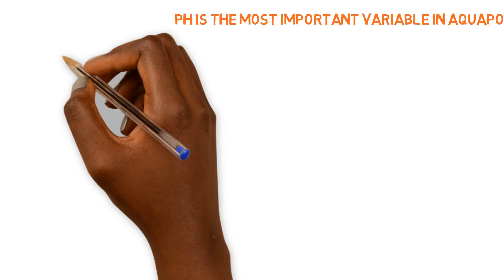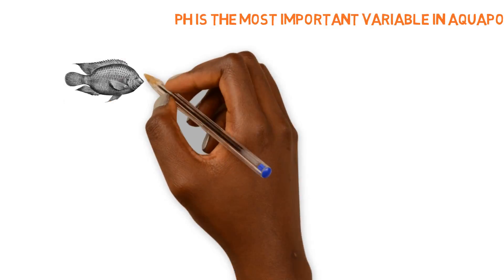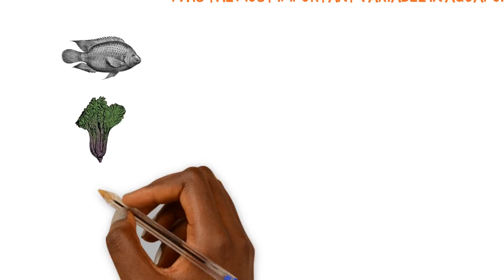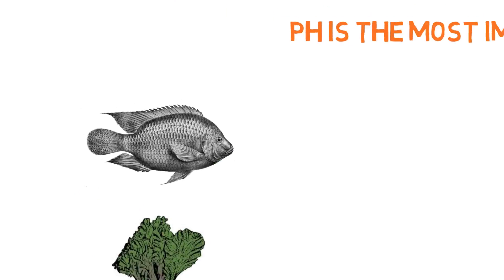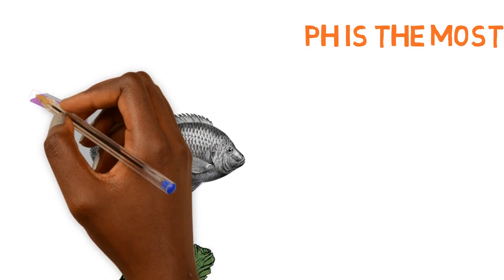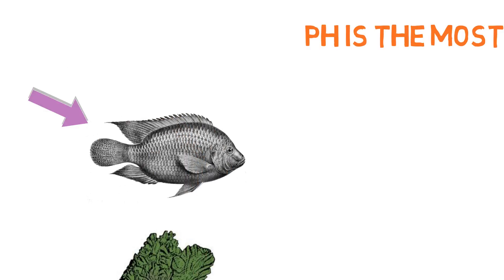So those three categories are the optimal pH range for tilapia, optimal pH range for plants, and optimal pH range for the nitrifying bacteria. So we can start with tilapia. Now these guys here are something serious. These guys are some of the most capable freshwater fish of adapting to a wide variety of water conditions, and pH is included in this.